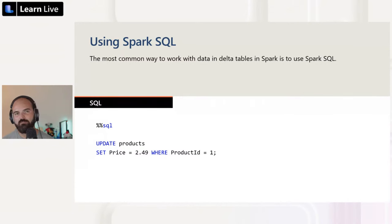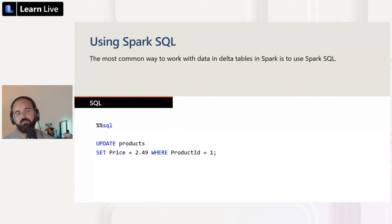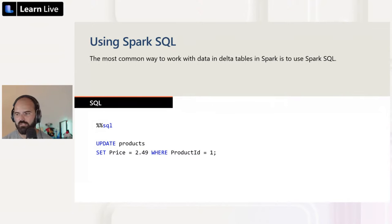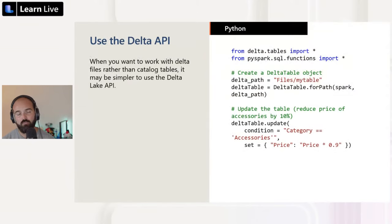One of the easiest ways to work with Delta tables is simply by using Spark SQL. You can create a notebook — we'll see how to do that during the exercise — and just write the SQL query. Here is a simple SQL query that will update the products table, setting a specific price for all rows with a specific product ID. You can use many SQL constructs — you can select from one table and then insert or merge data into another table.